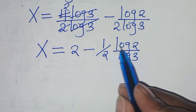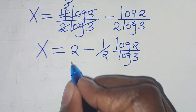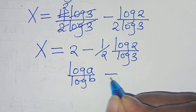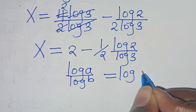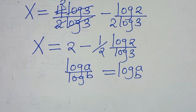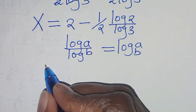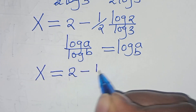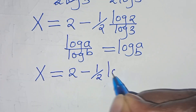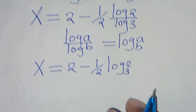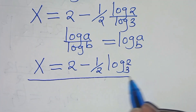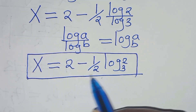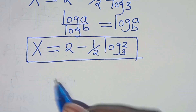We find that log 2 over log 3 is in the form of log a divided by log b, which we can transform as log base 3 of 2. Applying this property, x equals 2 minus one-half log base 3 of 2. This is the value of x. The next step is to verify that this value of x satisfies the equation.